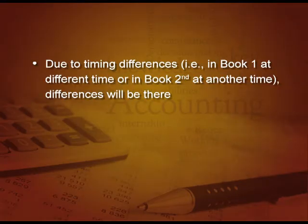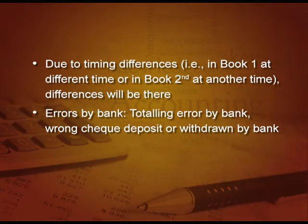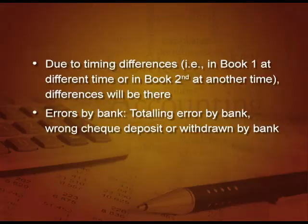Due to timing difference — recording in one book at a different time and in the second book at another time — differences will be there. Now, errors by bank: sometimes there is a totalling error or wrong cheque deposit — they may have deposited another person's cheque in my account or withdrawn from my account for some other person. Suppose there are two names of the same type, so it can be a case of deposit or withdrawal in the same account but for a different customer.